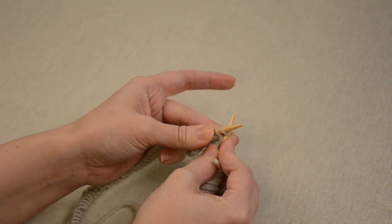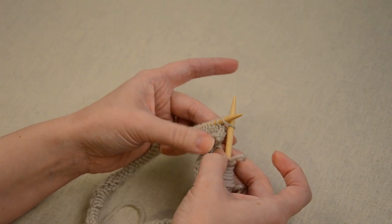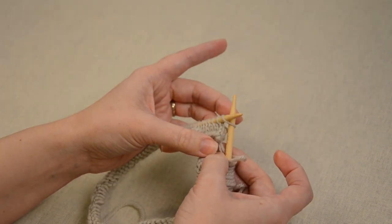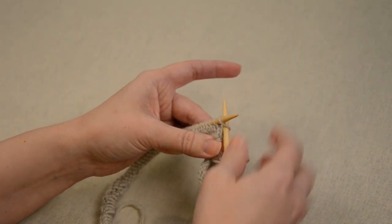After doing that, you want to continue to hold on to that previous stitch. At this point I would use my left hand, the thumb and the middle finger, and now you can knit the next stitch.